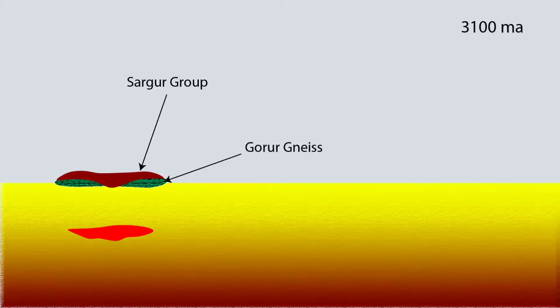Soon after this, ultramafic-mafic lava erupted and deposited as greenstone belt. As this greenstone belt deposited, crustal loading over Gorur Gneiss caused subduction and temperature and pressure to increase, which caused partial melting and produced TTGs in Gorur Group of rocks which were migmatized and now called Gorur Gneiss. They formed basement to Sargur Group.